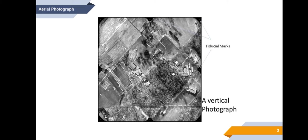The x-axis defines the direction of flight and the y-axis defines the flight line. The importance of such markings is that it is used to find the principal point of the photograph. If the opposite fiducial marks are connected, they intersect at the image center. This center is called the principal point of the aerial photograph, and the intersection of the fiducial marks represents the principal point. The principal point is otherwise called the optical or geometric center of the photograph.